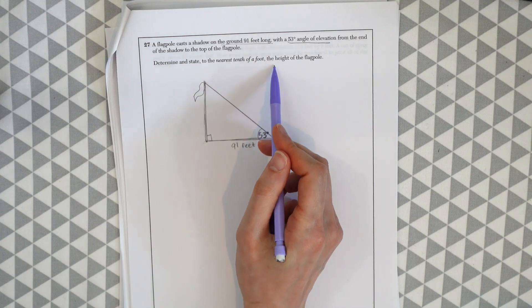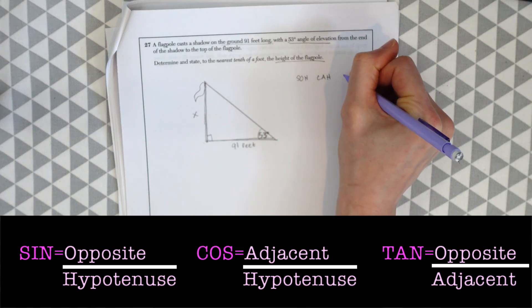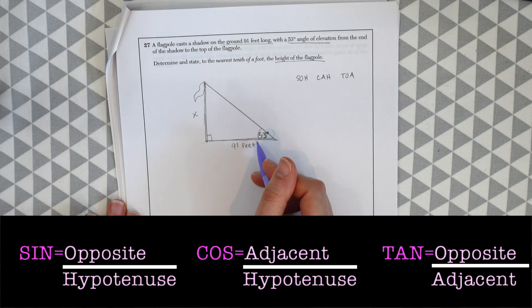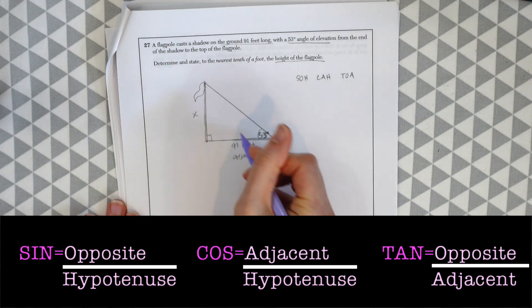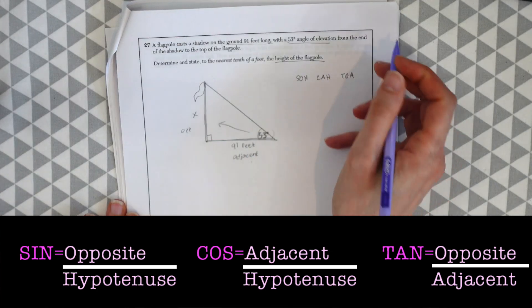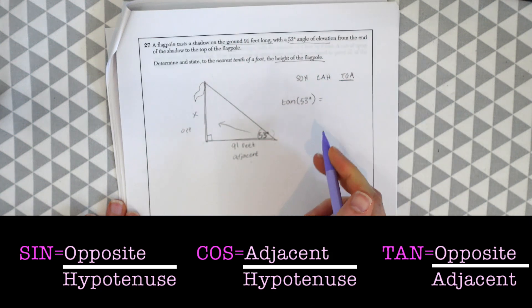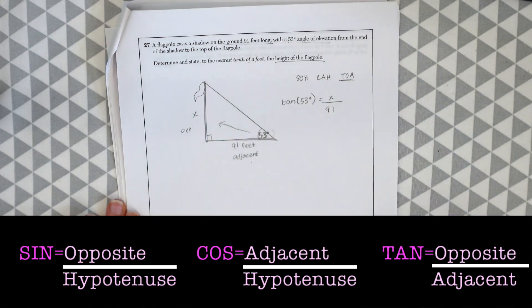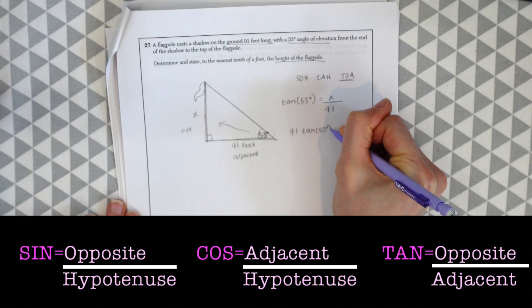We're trying to find the height of the flagpole. Let's write out SOHCAHTOA, our trig functions, and see what values we need. If this is the angle we're given, everything's in relation to this angle. Over here we have the adjacent value — 91 — and we have the opposite value that we're trying to find. So we want to work with the trig function that has adjacent and opposite, which is tan. So tan of 53 degrees equals the opposite x over the adjacent 91. We just cross multiply and get 91 times tan of 53 degrees equals x.